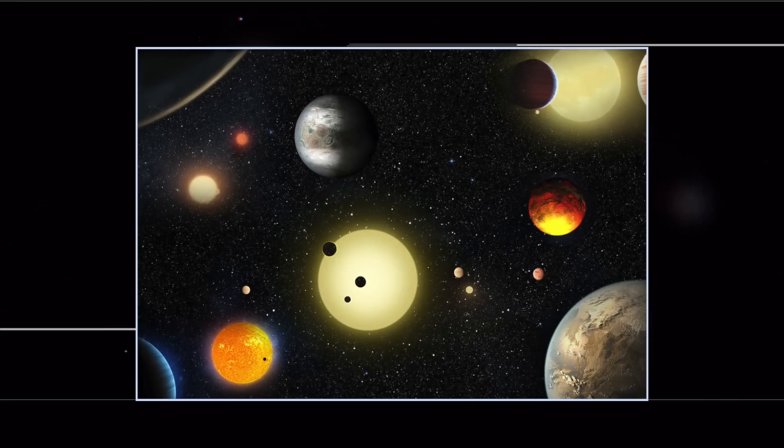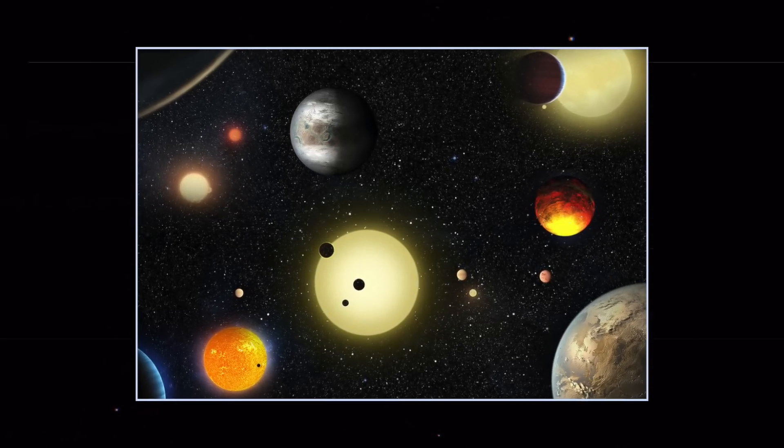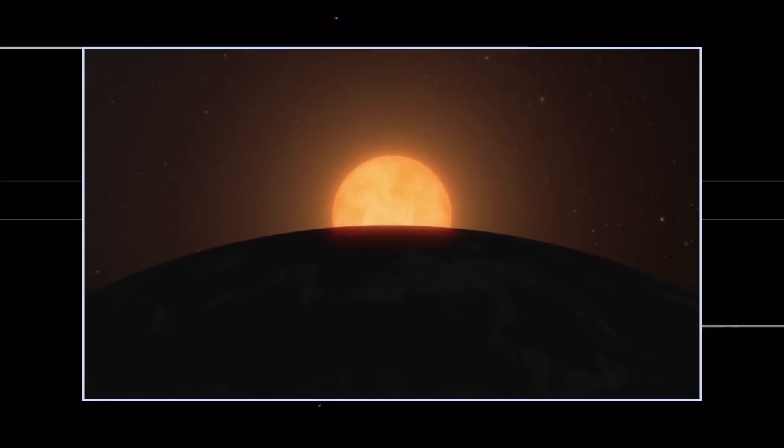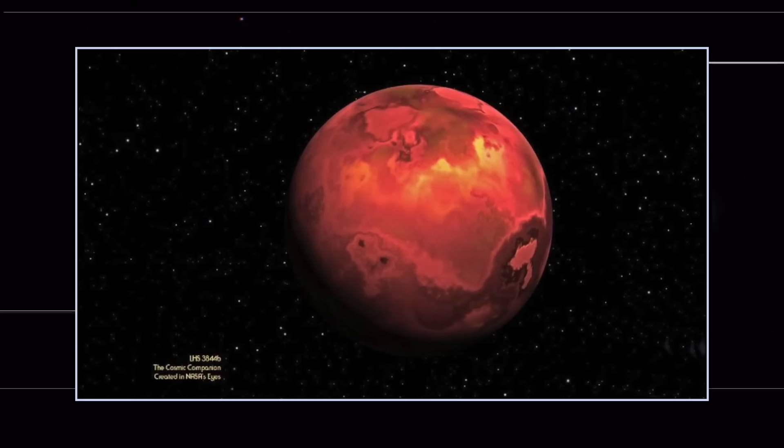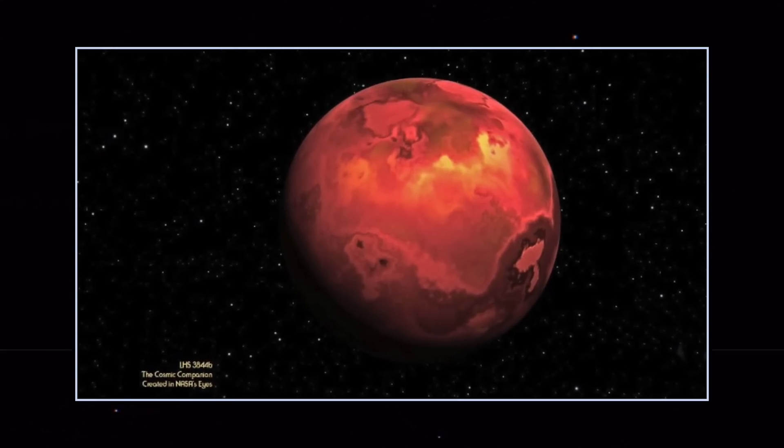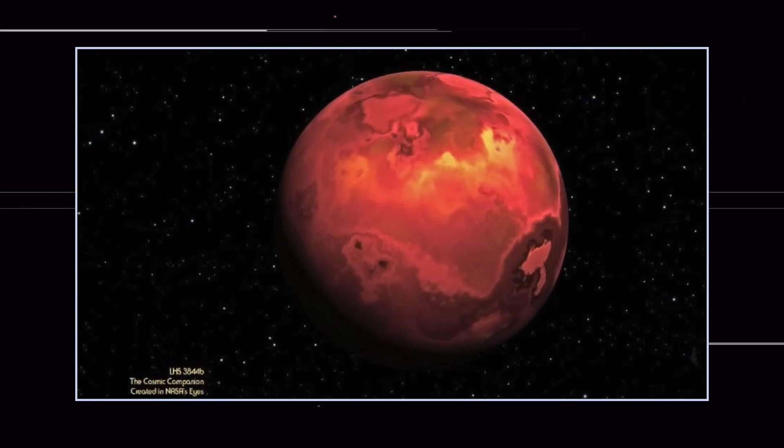Therefore, these observations of 55 Cancri e and LHS 3844 b will be conducted as part of Webb's Cycle One general observation program. And if everything goes well, it will turn out to be a huge success for the successor of Hubble and the scientists who designed it for decades.